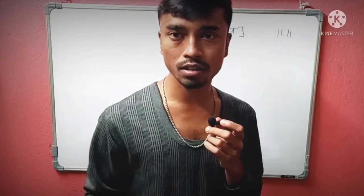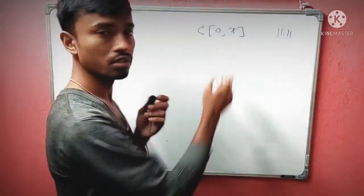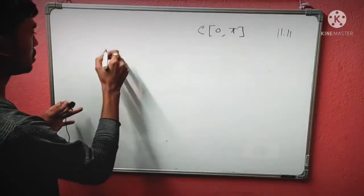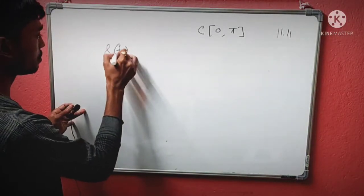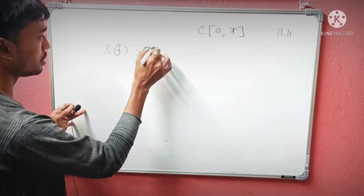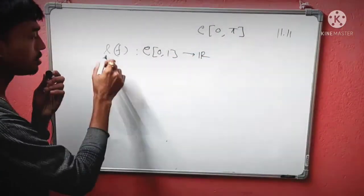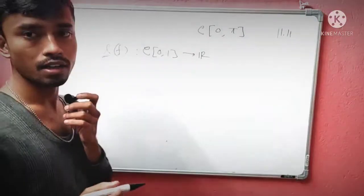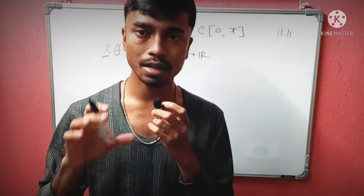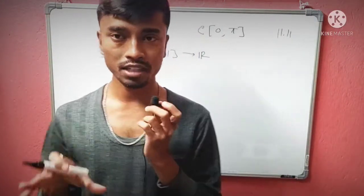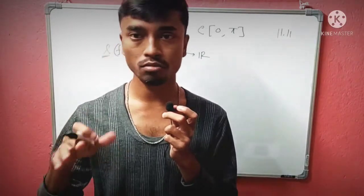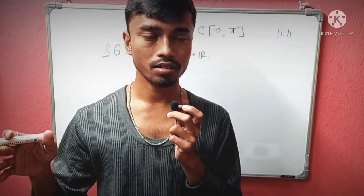There is a linear functional defined on this space. Let's say L(f) maps from C[0,π] to ℝ. L is the linear functional, which means a mapping from a normed space to the real numbers.